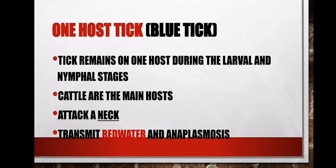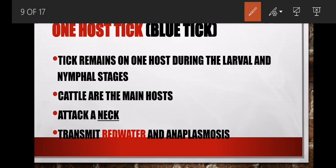Let's go deeper into ticks. Ticks are divided into three types based on their life cycle: one-host, two-host, and three-host. Focusing on the one-host life cycle — an example is the blue tick. These ticks remain on one host during their entire life stages. They prefer to attack cattle, particularly the neck area.